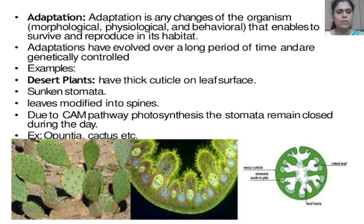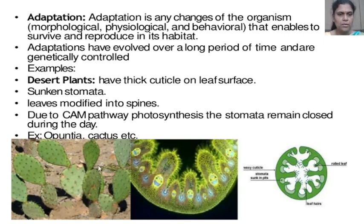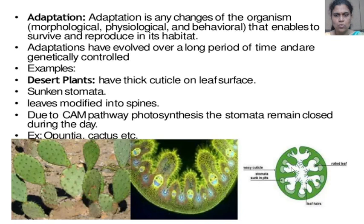Desert Plants have characteristic features: they have a thick cuticle on the leaf surface, presence of sunken stomata, and leaves modified into spines. Due to the CAM pathway photosynthesis, the stomata remain closed during the daytime. Examples include Opuntia and cactus. Here we see the first picture of Opuntia and a cross-section of the plant showing leaf marks, a waxy cuticle, and sunken stomata, as seen in the transverse section diagram.